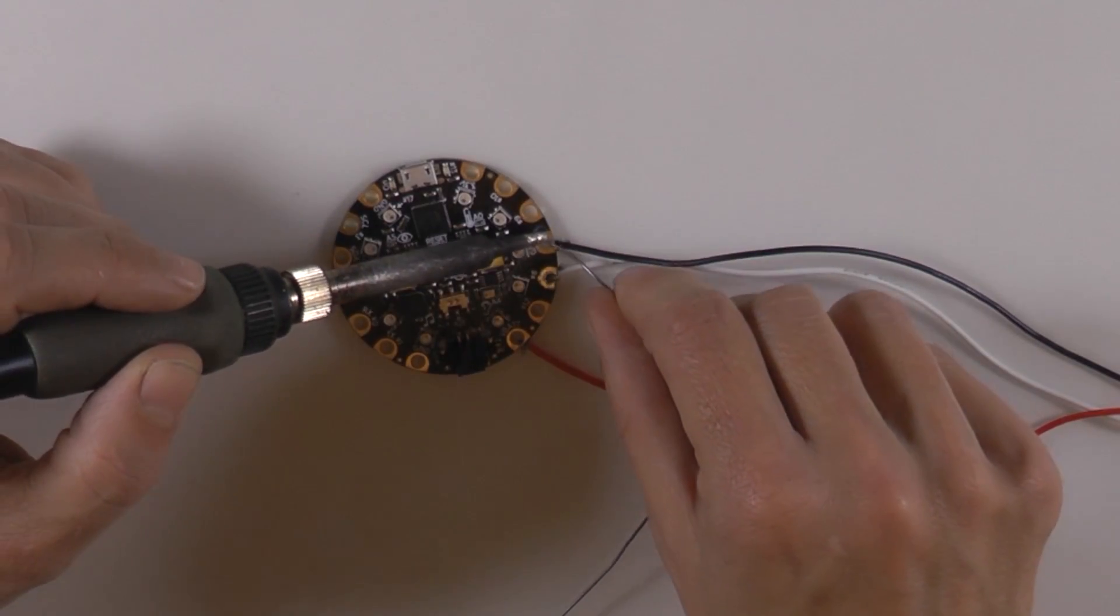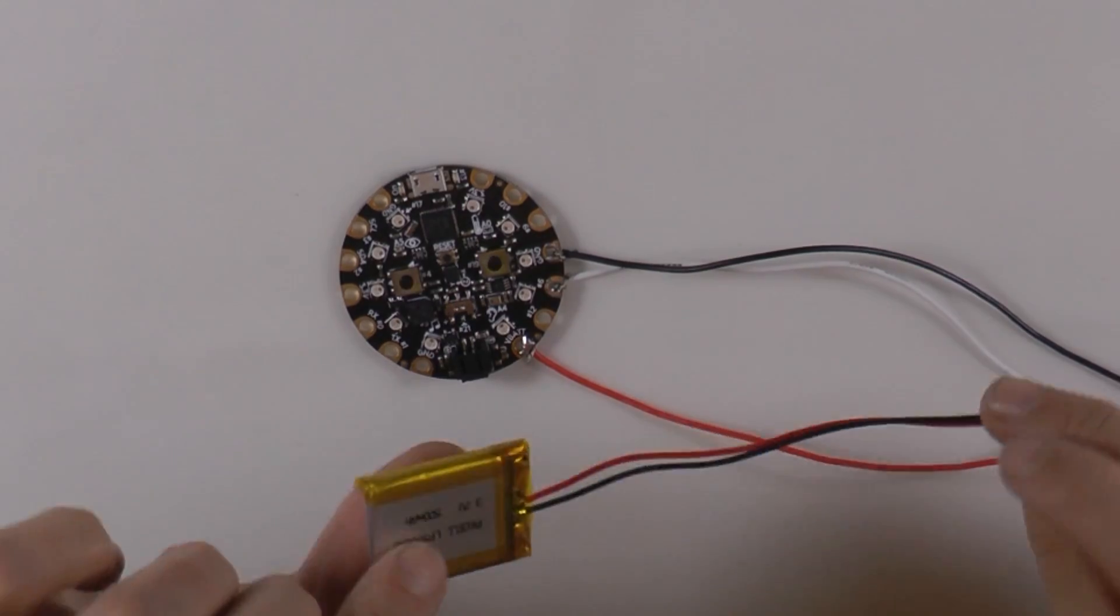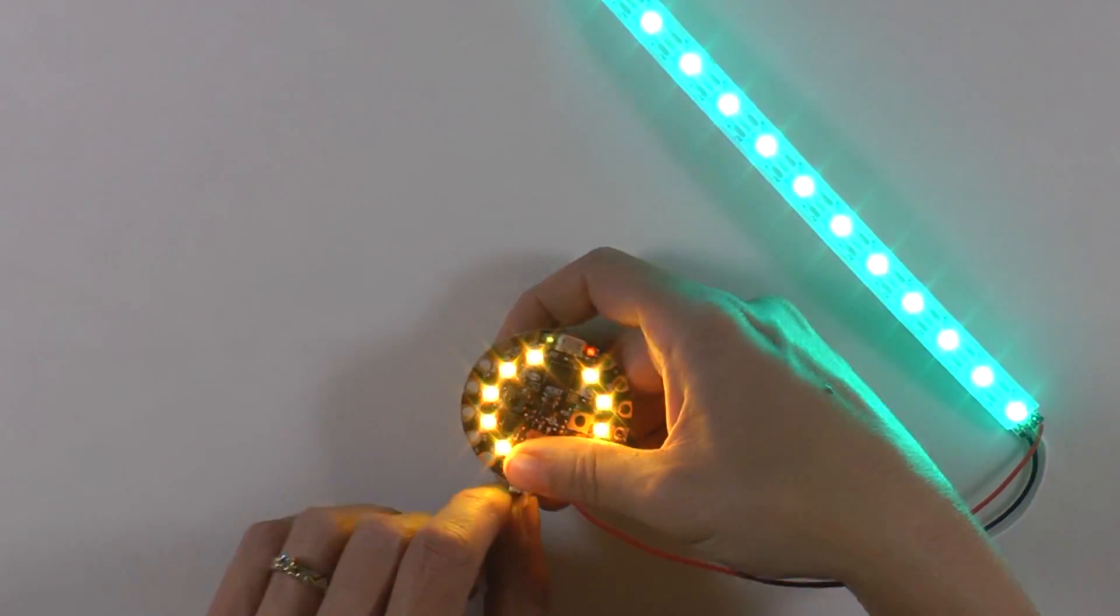Solder all three wires in place. Plug in a battery and be sure your lights come on.